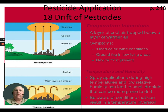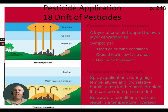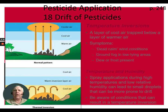Temperature inversions are something we've learned more about in recent years. Normally, as the sun rises during the day, it heats the ground, trees, blacktop, and other surfaces. Those surfaces then radiate heat upward into the air. The sun does not directly heat the air — the air is heated by heat given off from the earth, crops, and soil.